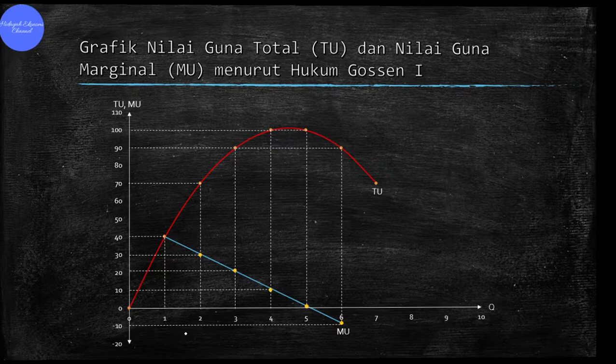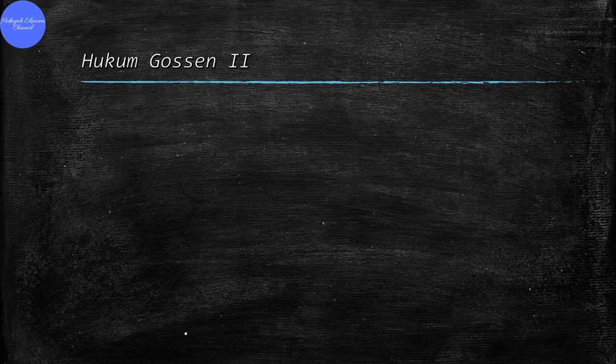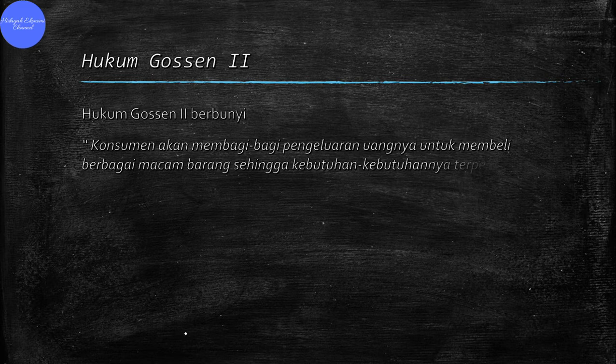B. Hukum Gossen 2 berbunyi: konsumen akan membagi-bagi pengeluaran uangnya untuk membeli berbagai macam barang sehingga kebutuhan-kebutuhannya terpenuhi secara seimbang.